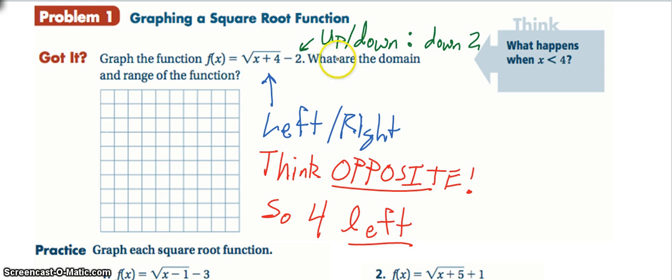So the change inside the radical actually moves our graph to the left or the right, but the thing is we have to think about the opposite of what it's actually telling me to do. So if it says add 4 to the x, that actually is telling me to go 4 left.